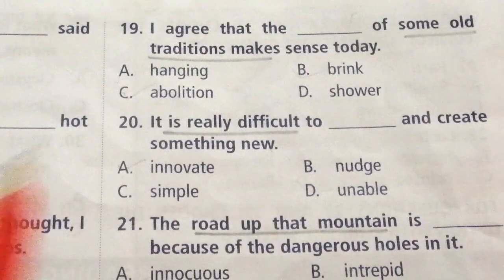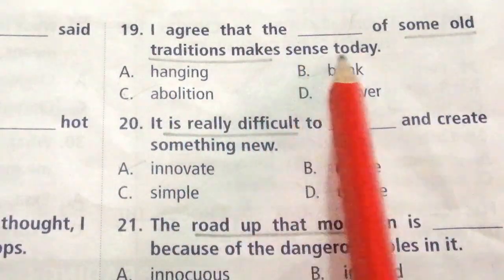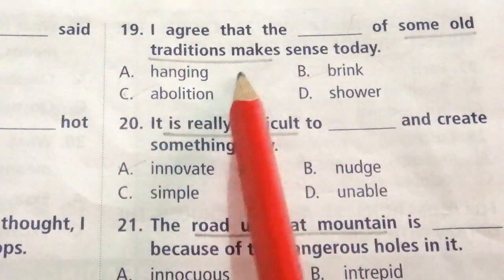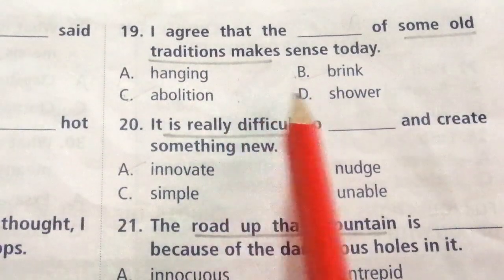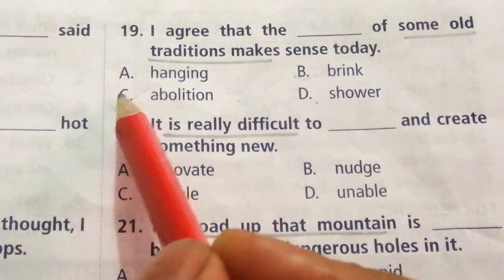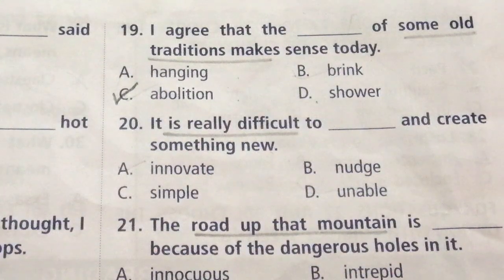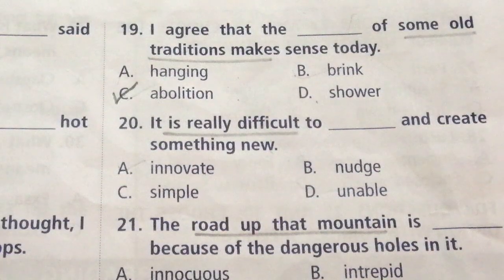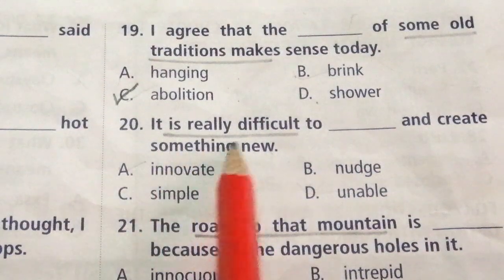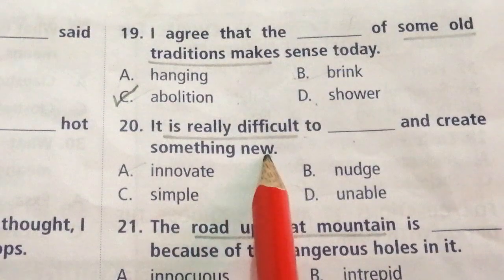Question 19: I agree that the dash of some old traditions makes sense today. Options: Hanging, Brink, Abolition, Shower. The answer is C: Abolition. I agree that the abolition of some old traditions makes sense today. Question 20: It is really difficult to dash and create something new.